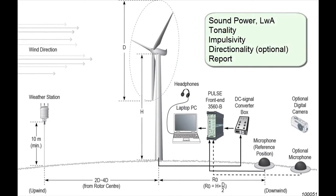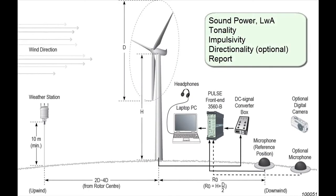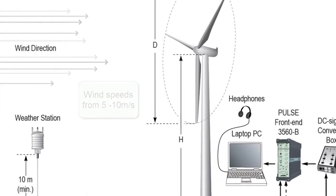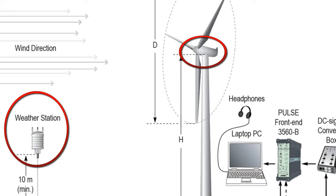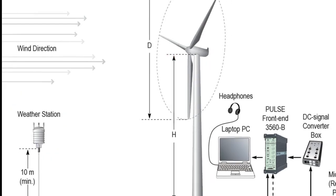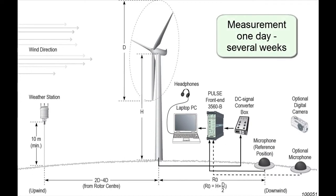Operational and background noise measurements are required at a range of wind speeds from 5 to 10 m per second, together with weather data and operational parameters from the turbine itself. Depending on the wind, a complete measurement could take from one day to several weeks.